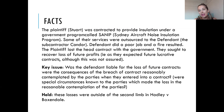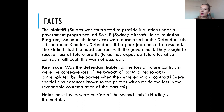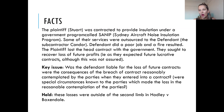This issue dealt in particular with the second limb of Hadley and Baxendale, which is the limb where losses arising were in the reasonable contemplation of the parties because of special circumstances known to the parties. The first limb of Hadley and Baxendale covers losses that are naturally arising from the breach of contract.